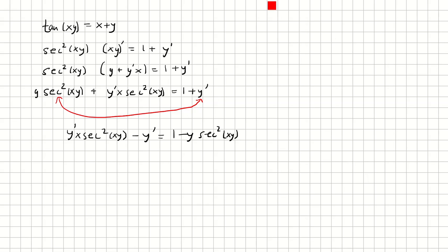Notice that both of these terms have a y prime, so I can factor that out. I have y prime times x secant squared xy minus 1, equals 1 minus secant squared xy.